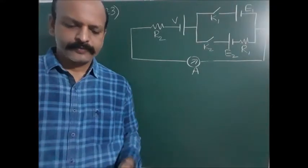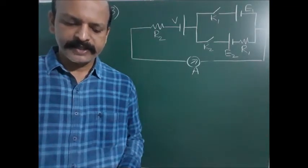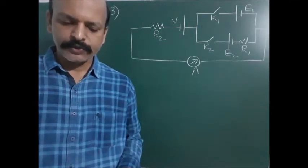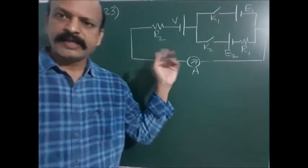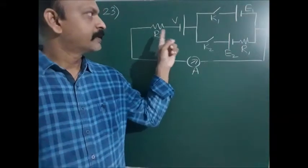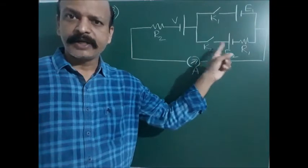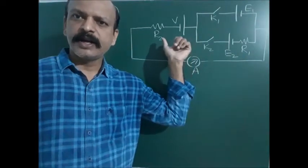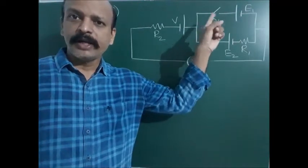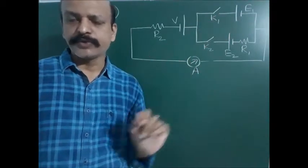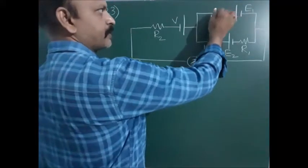Question 23: In the given arrangement, the reading of the ammeter is the same in each case when either k1 or k2 is closed. The circuit has a V battery, and e1 and e2 batteries connected with separate k1 and k2 switches. r1 is one resistance and r2 is another resistance. The ammeter reading is the same when either k1 or k2 is closed.